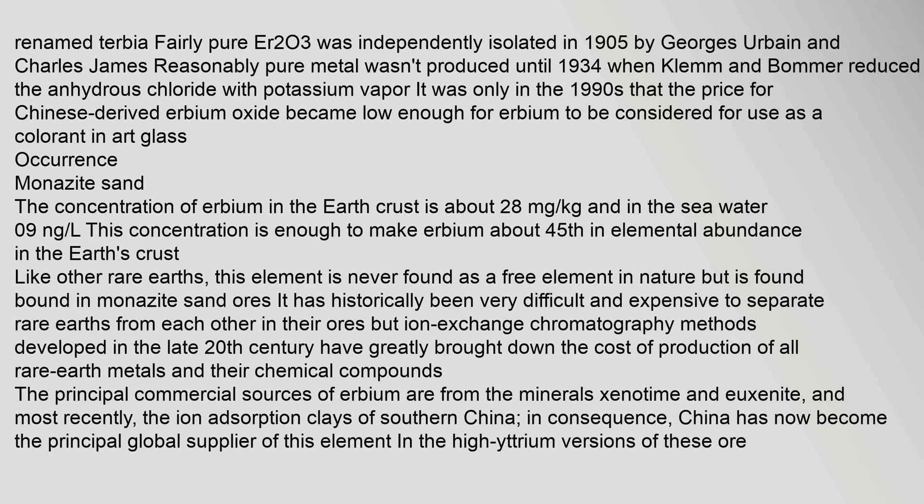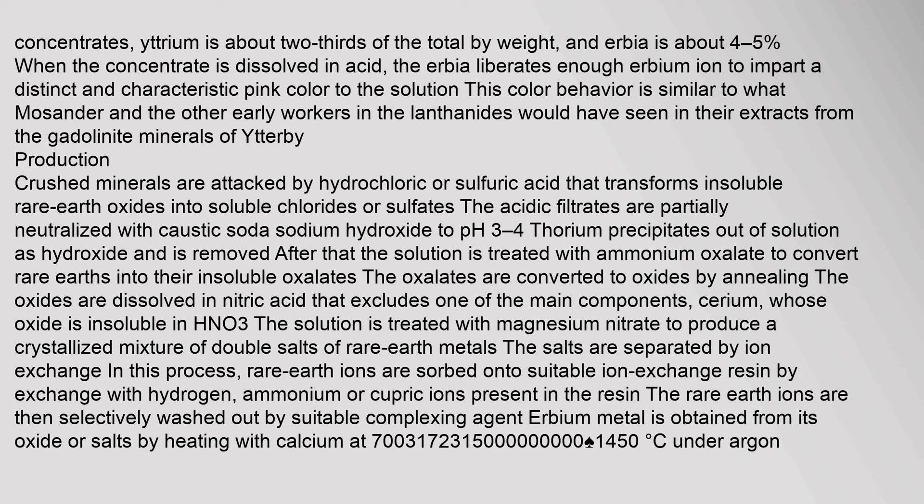The concentration of erbium in the Earth's crust is about 2.8 ppm. In monazite mineral concentrates, yttrium is about two-thirds of the total by weight, and erbia is about 4–5%. When the concentrate is dissolved in acid, the erbia liberates enough erbium ion to impart a distinct and characteristic pink color to the solution.